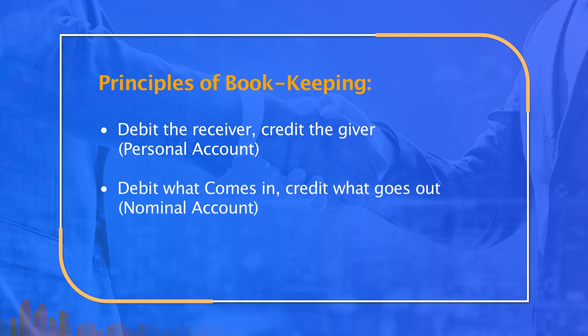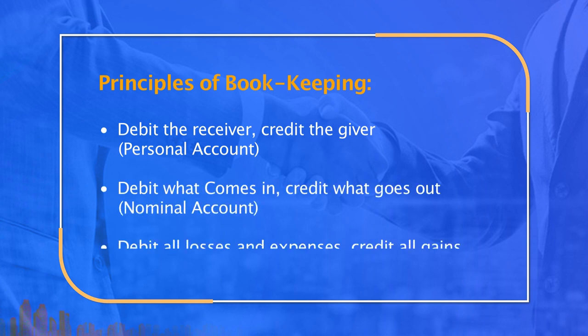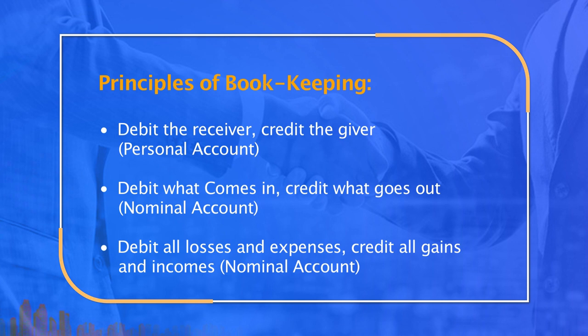Number two: debit what comes in, credit what goes out — which is a real account. Number three: debit all losses and expenses, credit all gains and incomes — which is a nominal account. These are things which are taught at the elementary level in commerce.